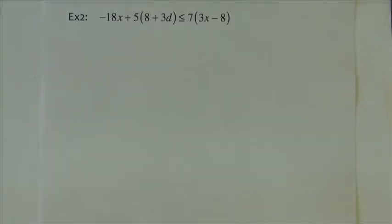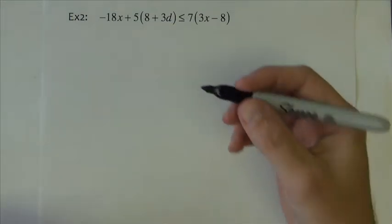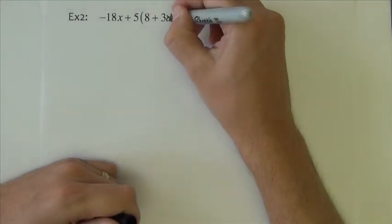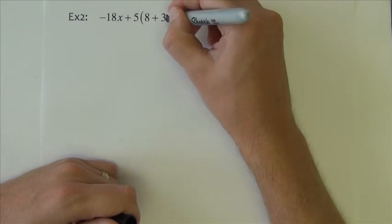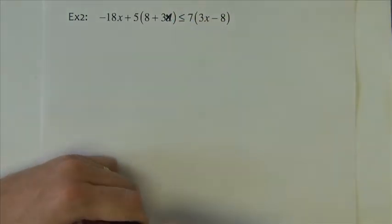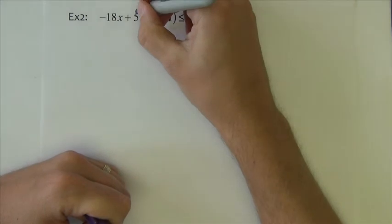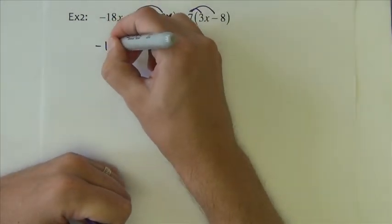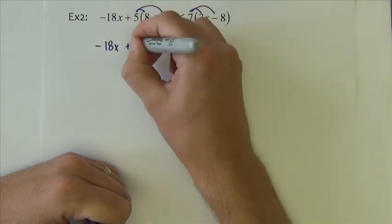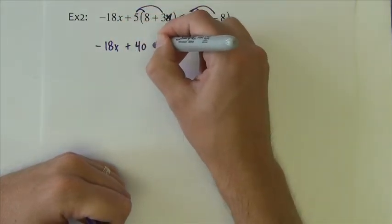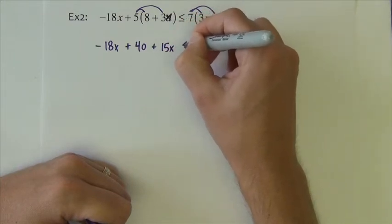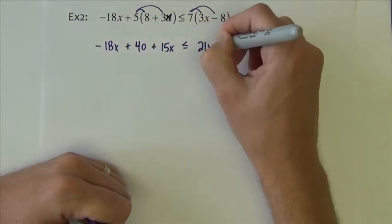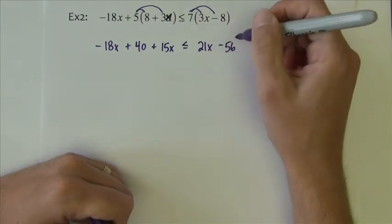Another example of an inequality. Again, I have another typo in this video. This d is supposed to be an x. In my defense, the d and the x are pretty close to each other on the keyboard, so it just happened. But let's use it as an x. I begin with a distributive property here and here. So we have negative 18x plus 40 plus 15x. It's less than or equal to 21x minus 56.